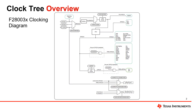ClockTree is the clock distribution network within the hardware and system level of the device, consisting of circuitry and clocking components. These structures are of varying complexities and are different between devices and their specific applications.